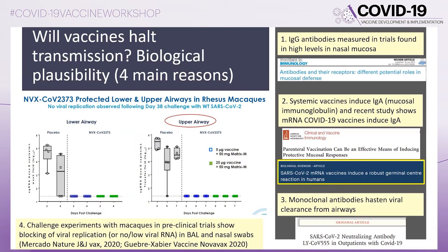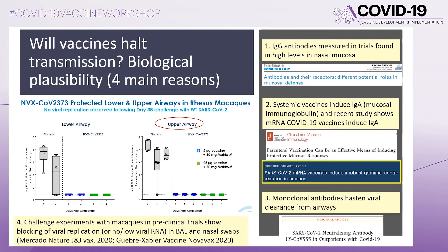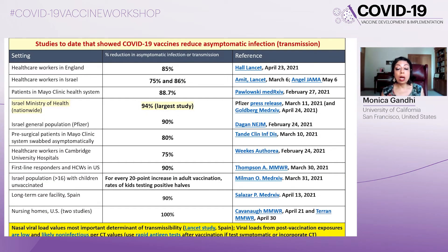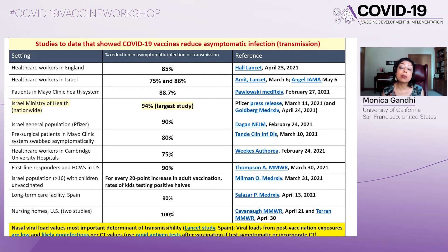In macaque trials, vaccinated primates inoculated with virus in the nose did not develop high viral loads there, which would block transmission. We now have study after study in healthcare workers, the general population, and various clinical settings showing that not only is symptomatic disease blocked by COVID-19 vaccination, but asymptomatic infection is blocked as well. The largest study, published in the Lancet from the Israeli Ministry of Health, shows a 92 to 94% reduction in asymptomatic infection with COVID-19 vaccines, confirming that these vaccines are blocking transmission.